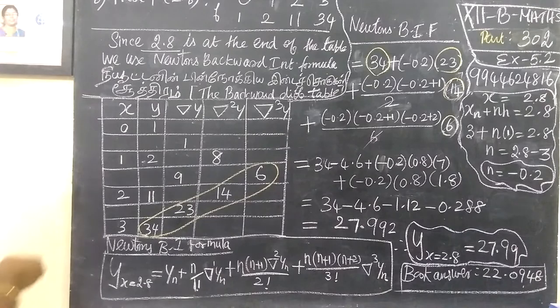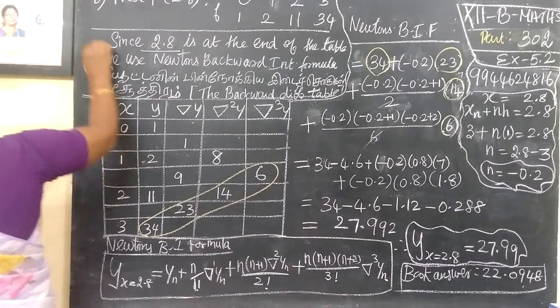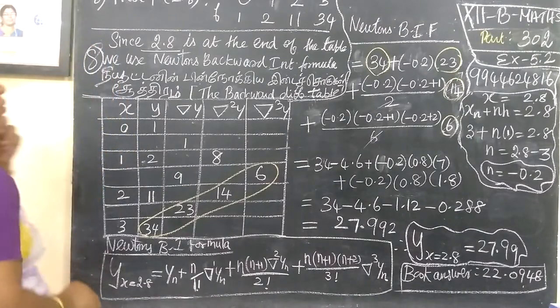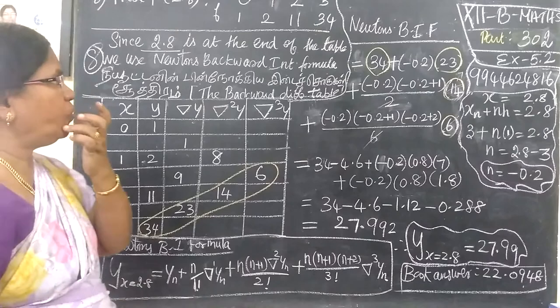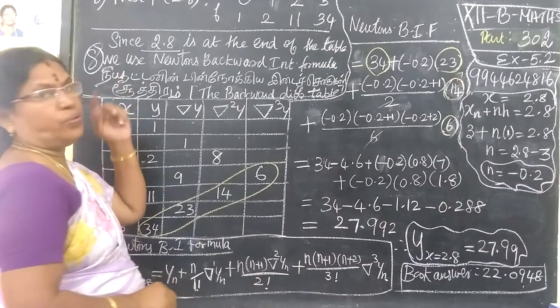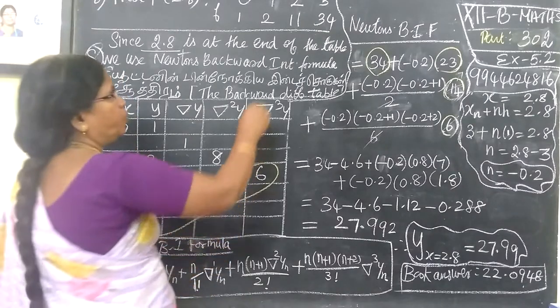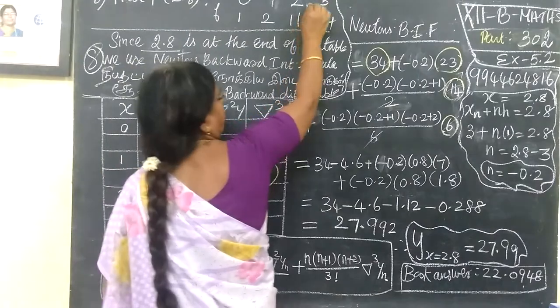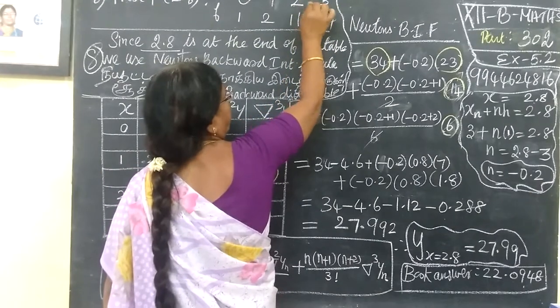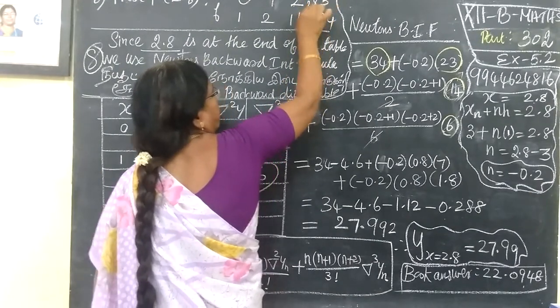Question number 8 is: we want to find F of 2.8 in the calculation. 2.8 in the calculation is 2.3k area somewhere else in the calculation.